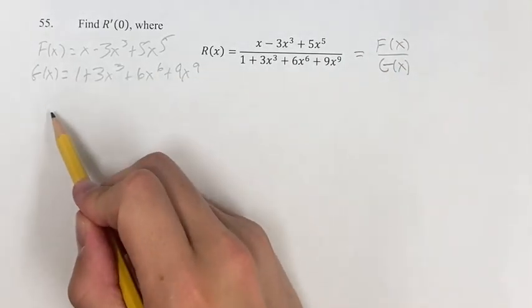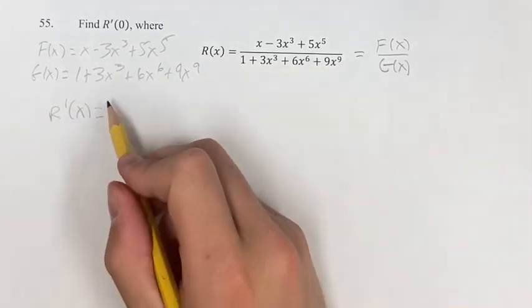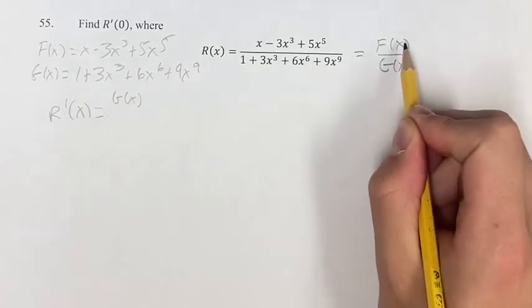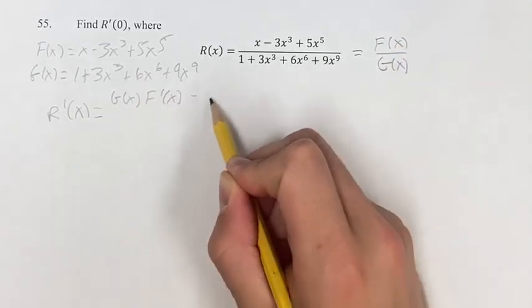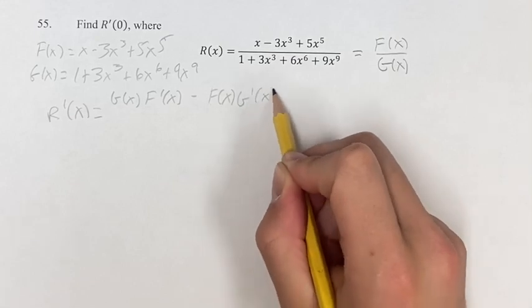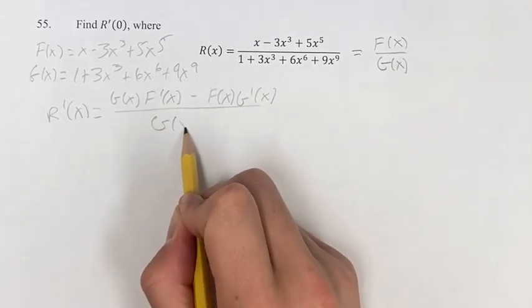Therefore, the derivative of R is going to be the denominator times the derivative of the numerator minus the numerator times the derivative of the denominator over the denominator squared.